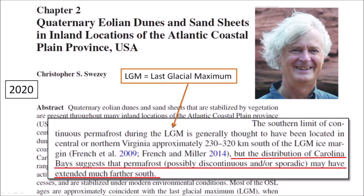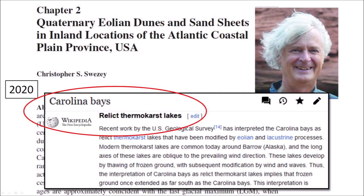Geologist Christopher Suisi promoted the Thermokarst Fallacy in one of his publications, where he stated that the presence of Carolina Bays in North and South Carolina implies that these states had permafrost at one time, even though two different publications say that the southern limit of continuous permafrost during the last glacial maximum was located in central or northern Virginia. The Thermokarst Fallacy has made its way into Wikipedia, where the Carolina Bays are described as relict thermokarst lakes.